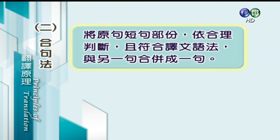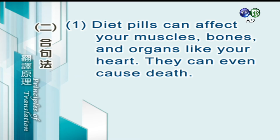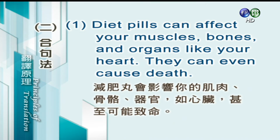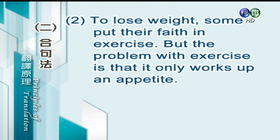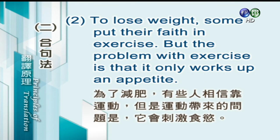第二种方法是合句法：将原句短句部分依合理判断，且符合译文语法，与另一句合并成一句。譬如：Diet pills can affect your muscles, bones and organs like your heart. They can even cause death，译成：减肥丸会影响你的肌肉、骨骼、器官如心脏，甚至可能致命。原文是两句英文，我们译成了一句中文，这就是所谓的合句法。另一例：为了减肥，有些人相信靠运动，但是运动带来的问题是它会刺激食欲。